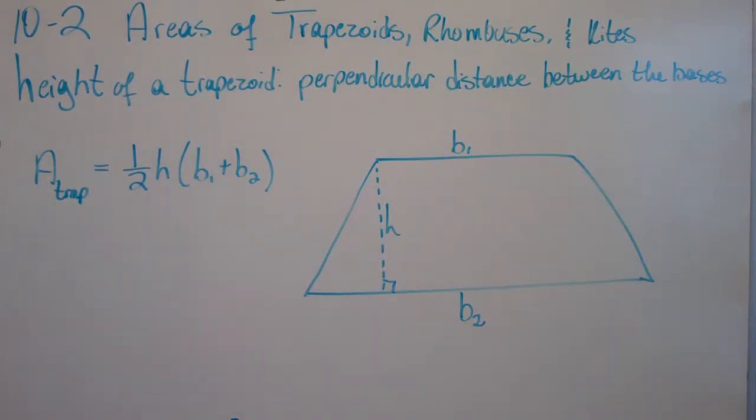This video is about 10-2 areas of trapezoids, rhombuses, and kites.